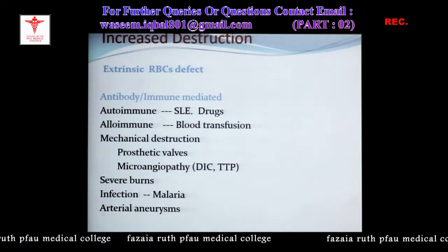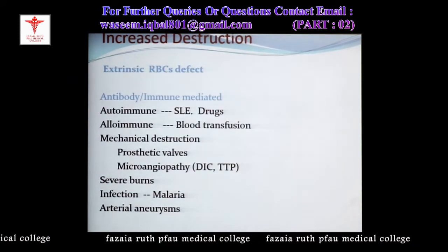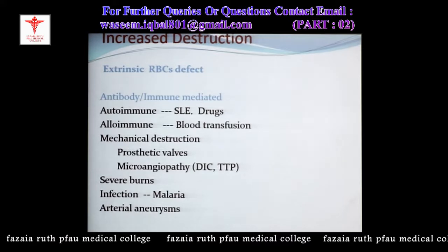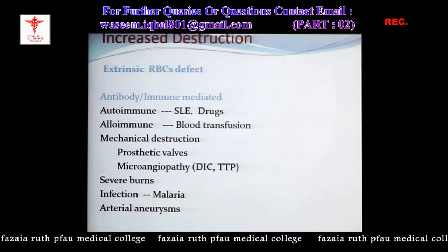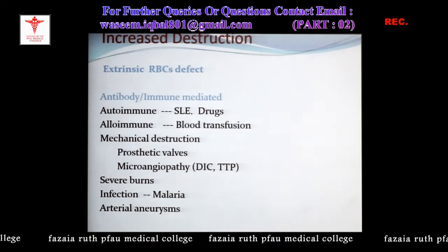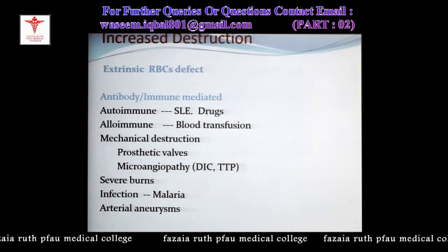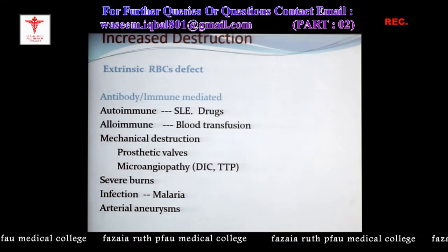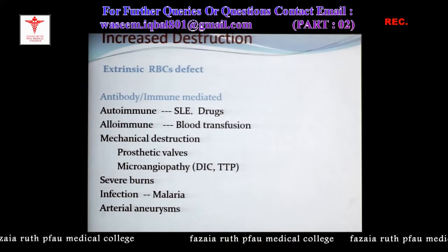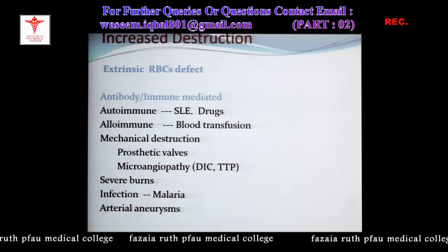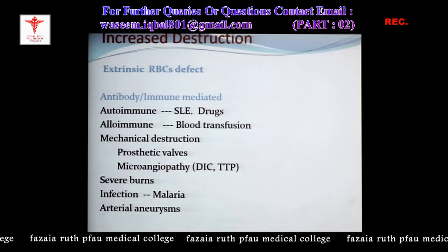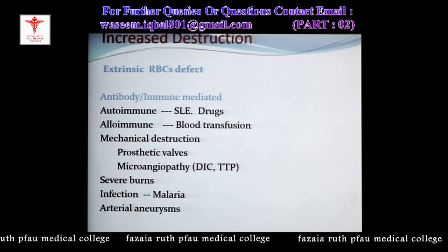Now talking about increased destruction due to extrinsic defects — defects from outside the body. The most important is antibody-mediated or immune-mediated hemolysis. A prototype is autoimmune hemolytic anemia, typically seen in autoimmune disorders like SLE (systemic lupus erythematosus). Drugs can also lead to antibody formation. Alloimmune hemolysis refers to antibodies from outside — for example, mismatched blood transfusion where a person with blood group A receives blood group B, and pre-formed anti-B antibodies destroy the B blood cells.